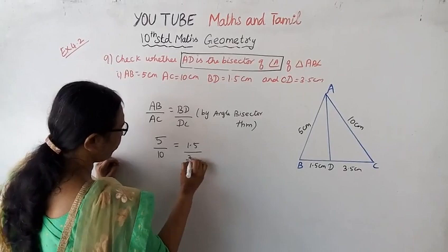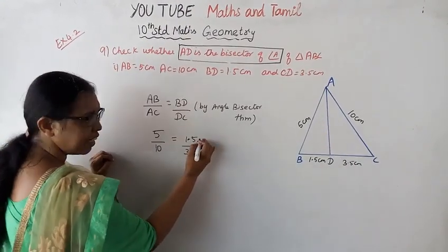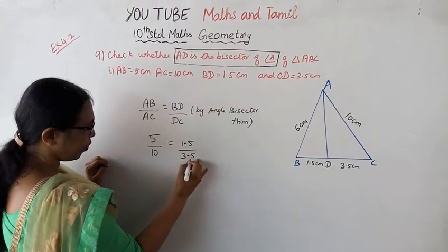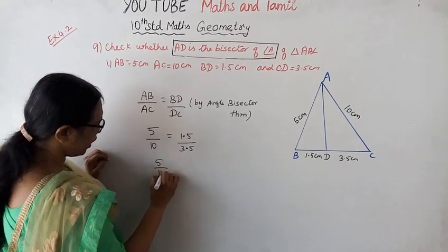To eliminate decimal points, multiply by 10 and divide by 10. This gives us 5 by 10 equals 15 by 35.